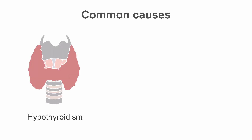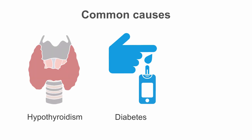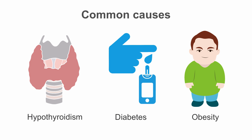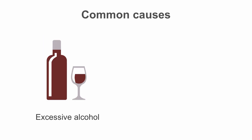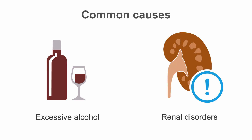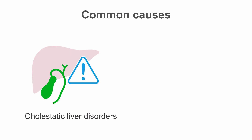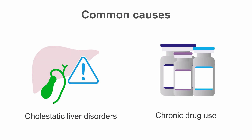Common causes of secondary dyslipidemia include hypothyroidism; diabetes, with characteristically high triglycerides, low HDL cholesterol, and elevated LDL cholesterol; obesity with similar abnormalities; excessive alcohol consumption leading to elevated triglyceride levels; renal disorders like nephrotic syndrome or chronic renal failure; cholestatic liver disorders like primary biliary cholangitis; and the chronic use of drugs like steroids, beta blockers, thiazide diuretics, or anticonvulsants.